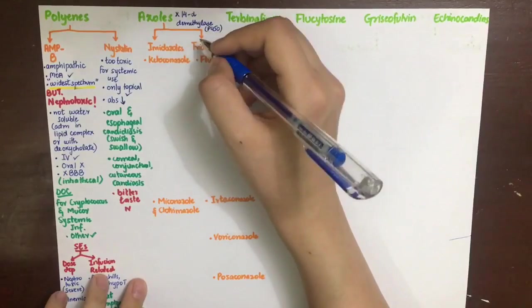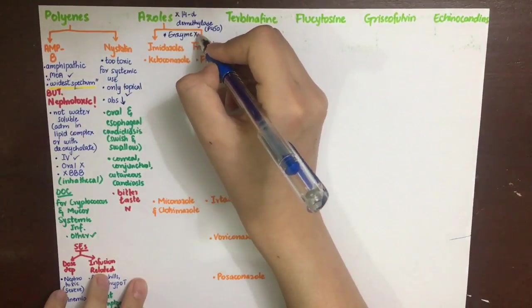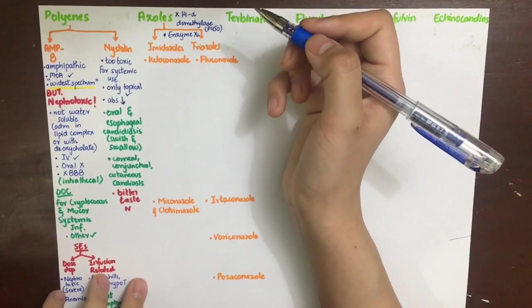Azoles, apart from inhibiting fungal P450 enzymes, also inhibit human liver P450 enzymes and thus can be associated with drug interactions.